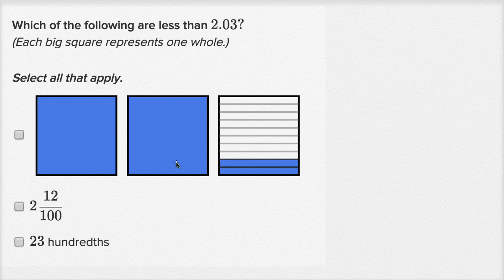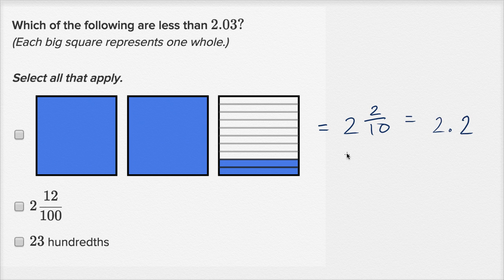For this one, we have one whole, another whole, and then a part that isn't a full whole. I've divided a whole into tenths and I have 2 tenths here. So this number is equal to 2 and 2 tenths — you can see: 1, 2, and then 2 of the 10 equal sections — which is the same thing as 2.2. If we want to compare it to 2.03, we could view 2.2 as 2.20, which means 2 and 20 hundredths. And 2 and 20 hundredths is for sure greater than 2 and 3 hundredths, so this is not less than 2.03 — it's greater than 2.03. I'm going to rule that one out.